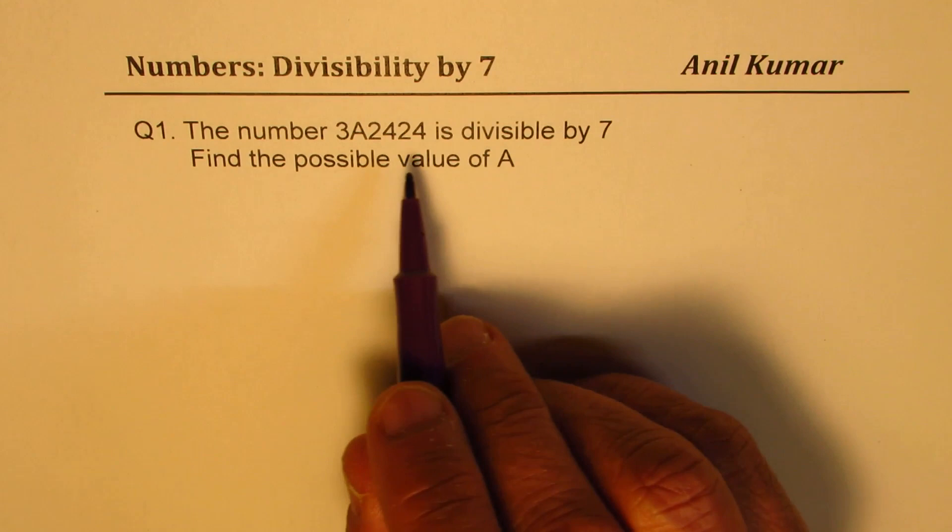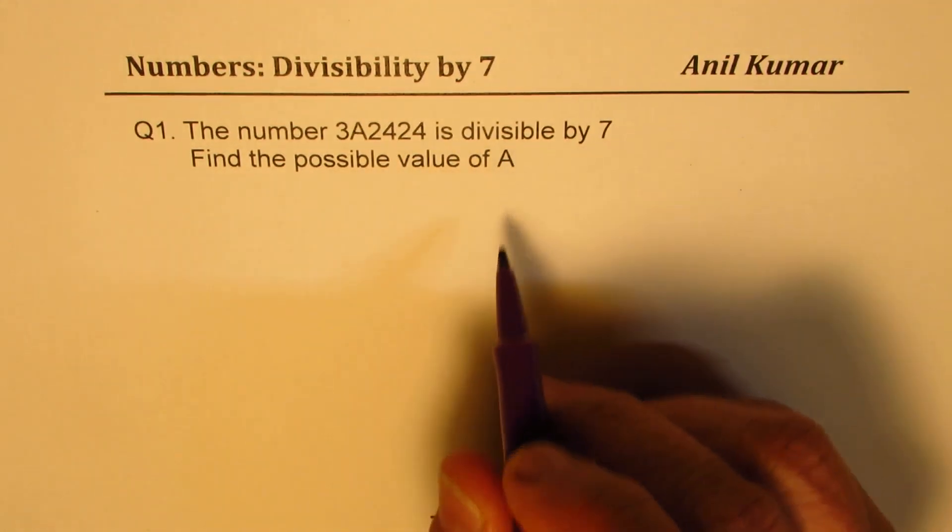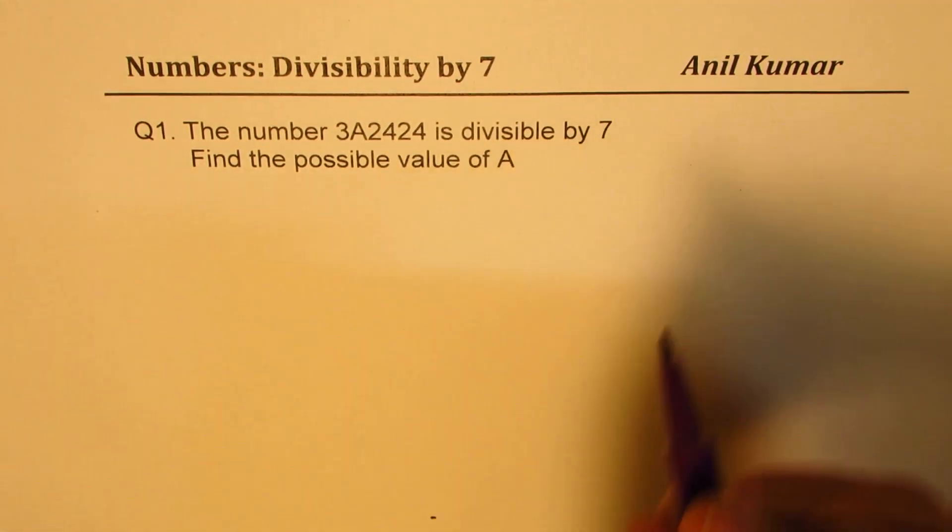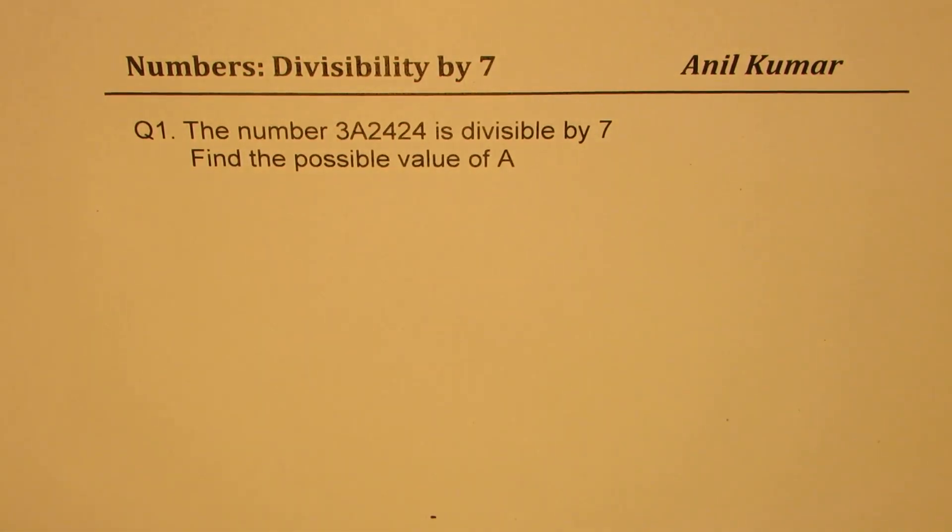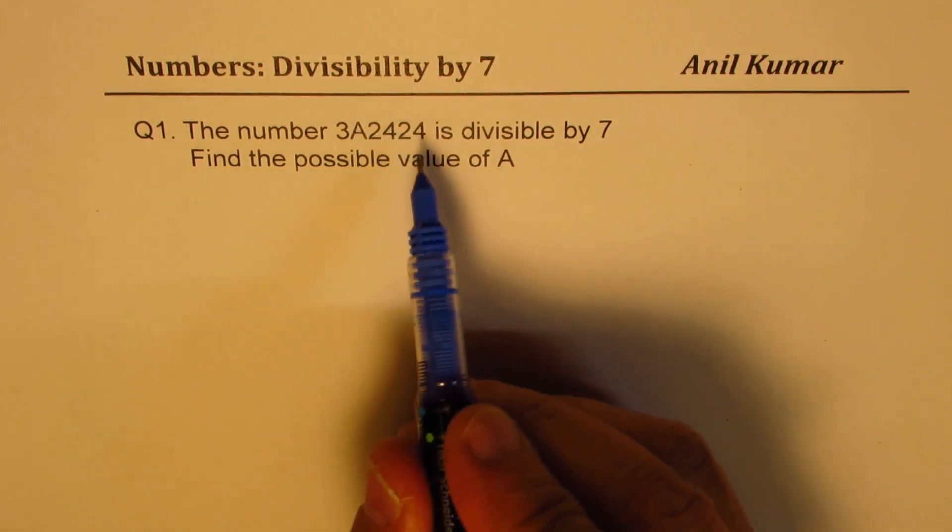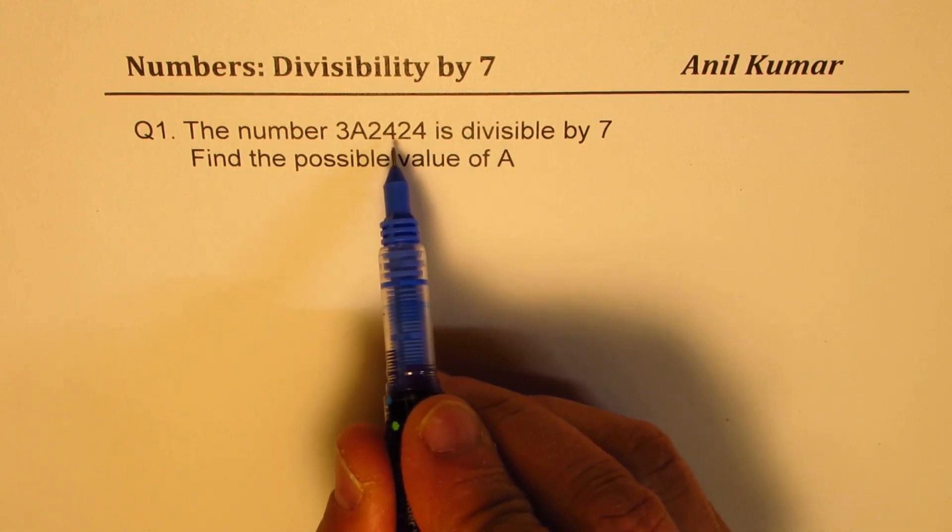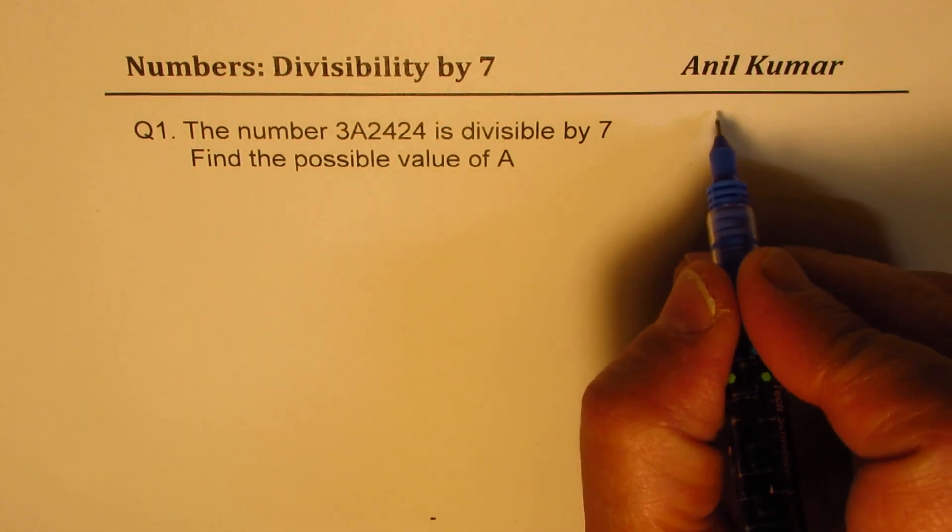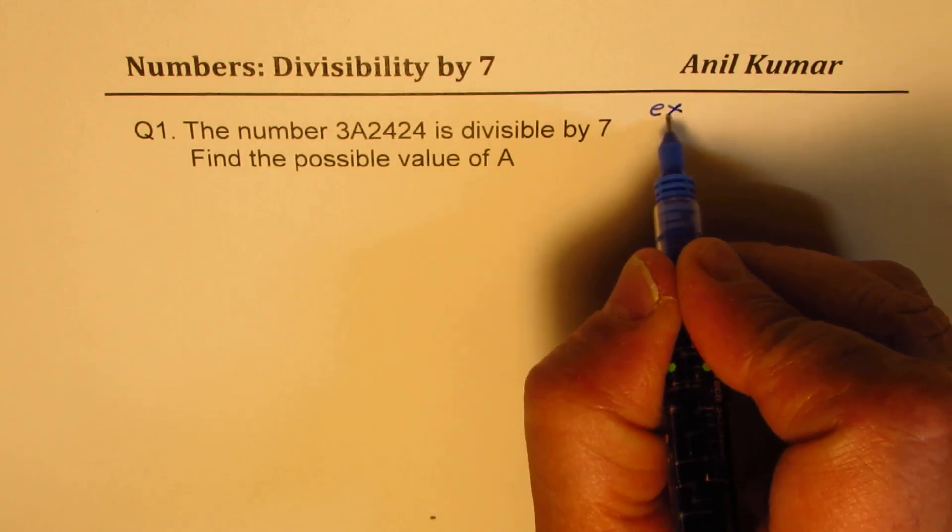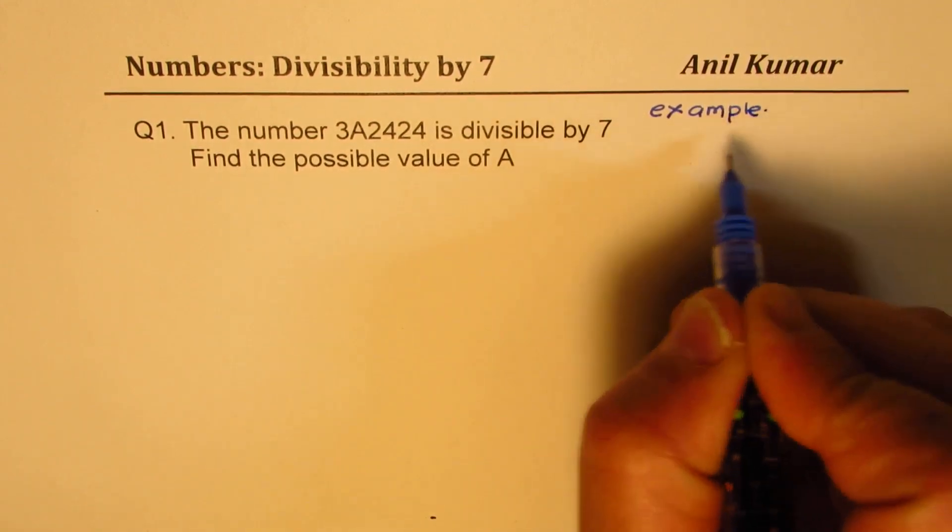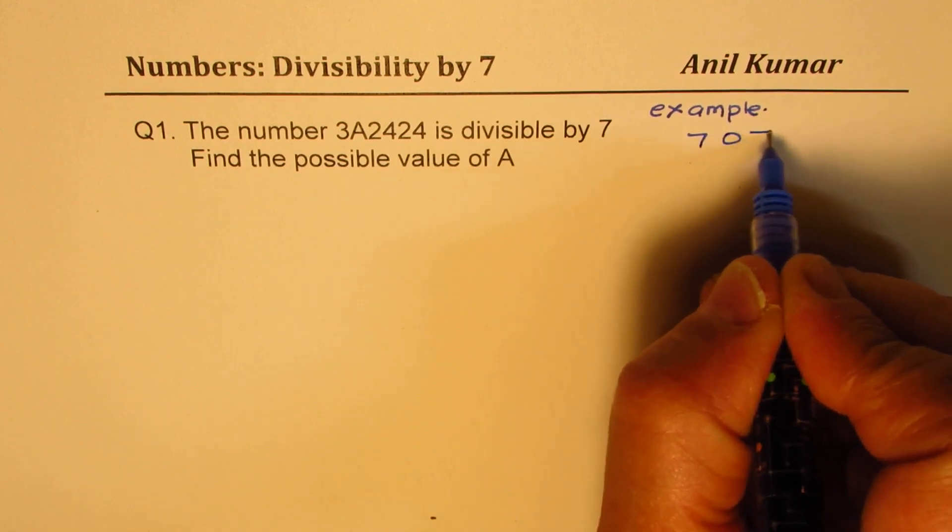Now let me first explain you the rule. The idea here is that what we are going to do basically is multiply the last digit by the number 2 and take away that product from the remaining number. Let me give you a simple example. Let's take the number 707.